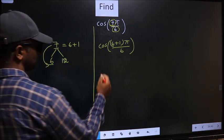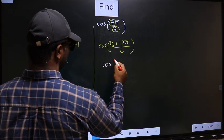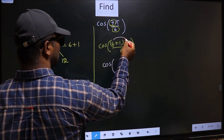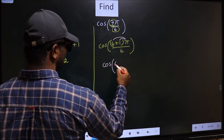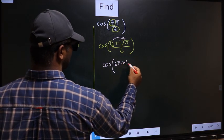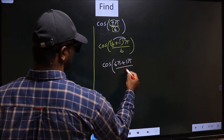Next, cos. Now you should open up the brackets. We get 6π plus 1π by 6.